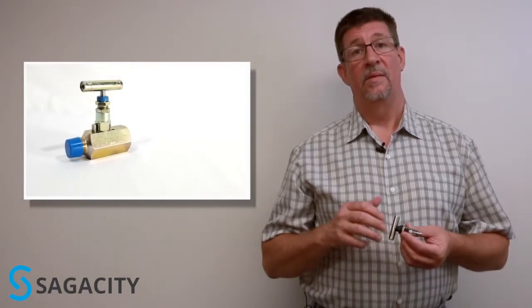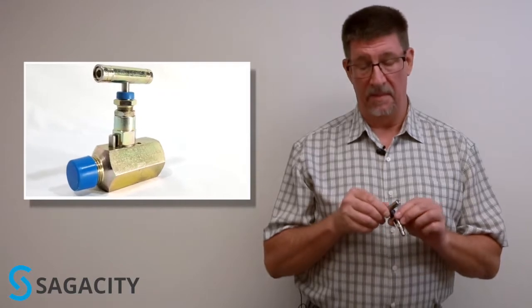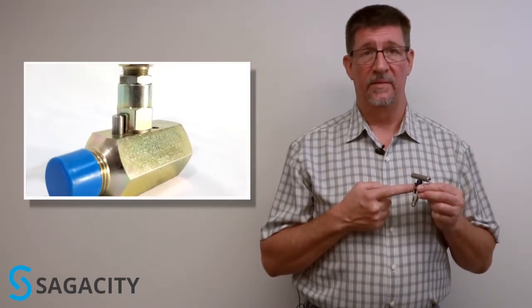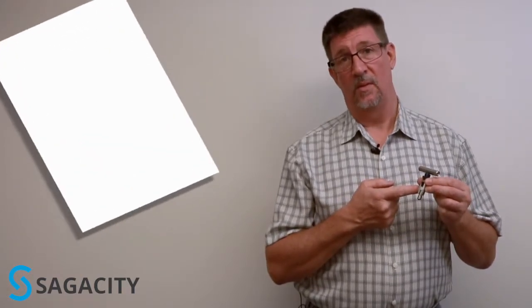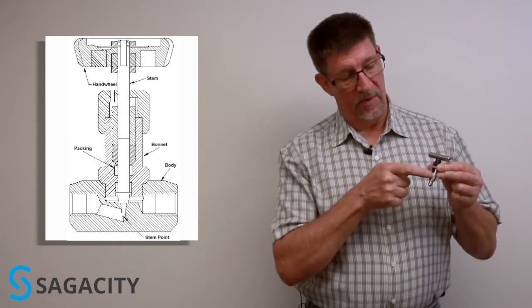First, you need to know exactly how the valve is put together. We talked about the body material. The body and the bonnet, the top part of the valve, typically are the same material of construction. This particular cutaway shows the handle, our bonnet assembly with packing,